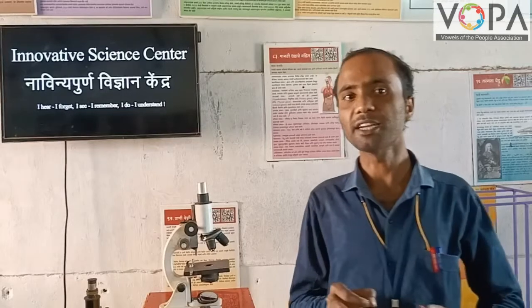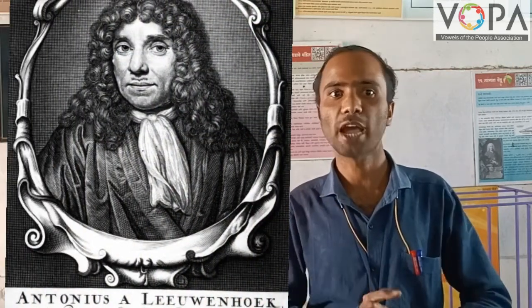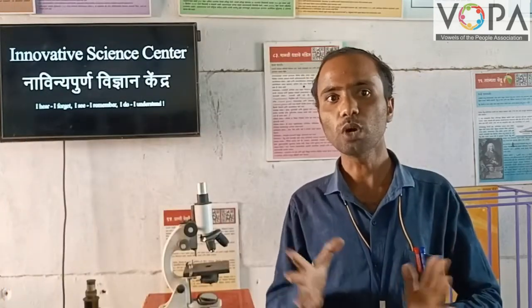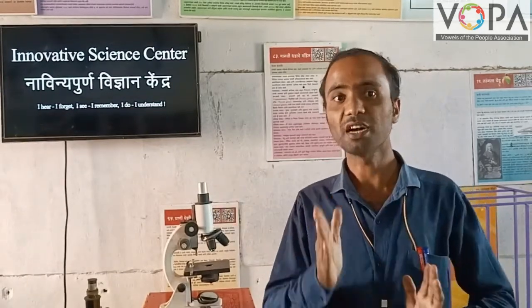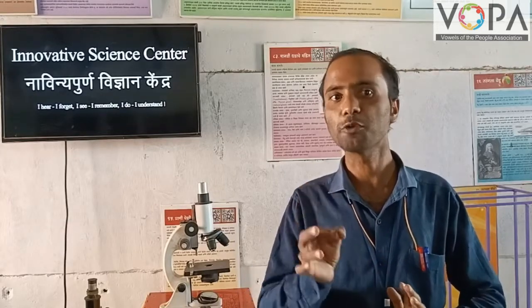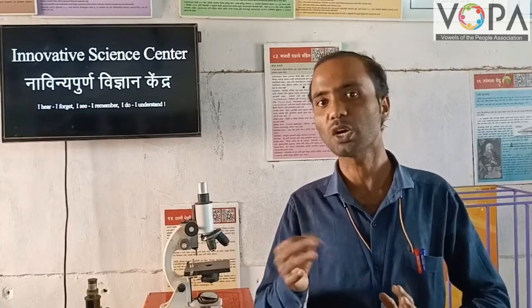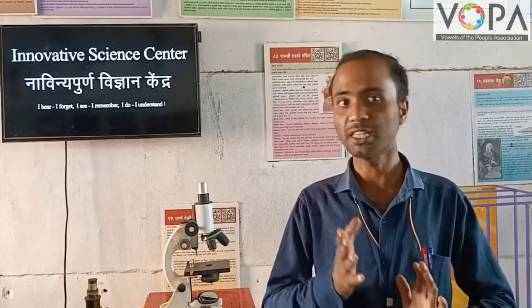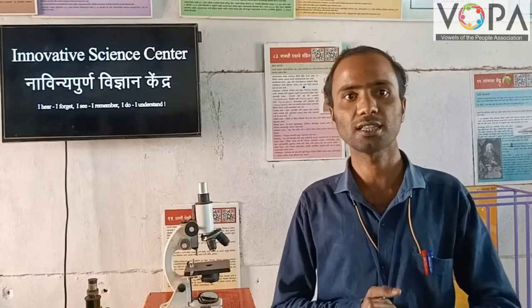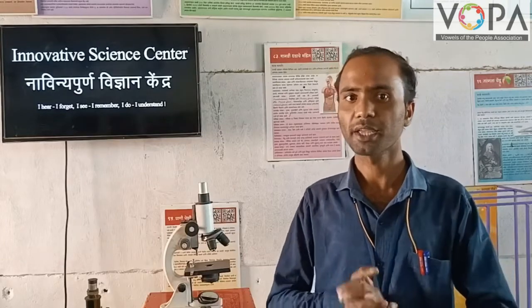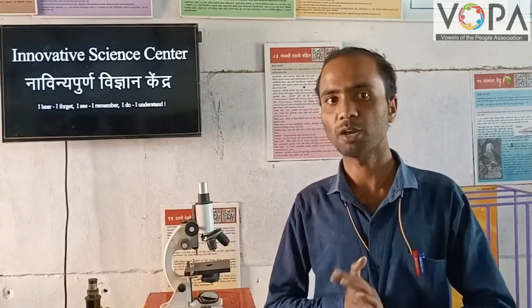In 1673, a scientist named Anton van Leeuwenhoek assembled different types of lenses together and made a model of the microscope. He was the first person who observed live bacterial cells and protozoan cells under the microscope.